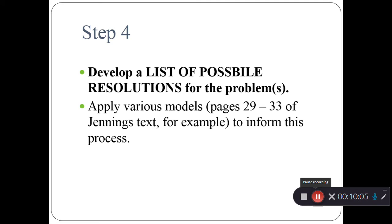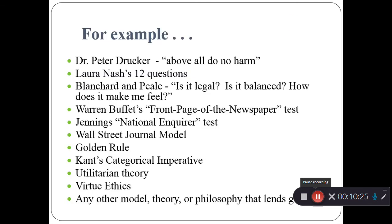Step four, develop a list of possible resolutions for the problem. Well in this case there aren't that many possible resolutions. We can either sneak into the movie, we cannot sneak into the movie, and we could buy a ticket for the movie. So those are the types of possible resolutions here. If we look at those, we think, okay, front page of the newspaper test, for example. How would I feel if I sneak into the movie, get caught, and that story ends up on the front page of a newspaper? Am I okay with that? Would I feel okay with my decision to sneak in? Or does that make me think that that's not a helpful way to resolve this problem?